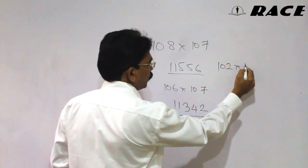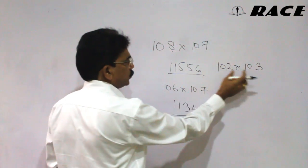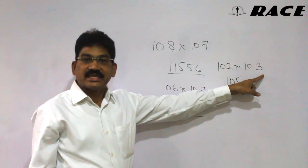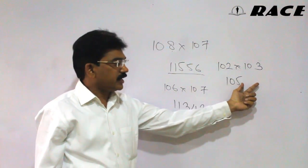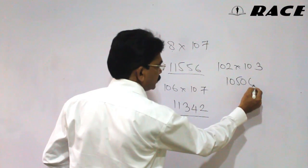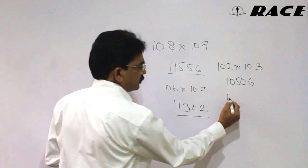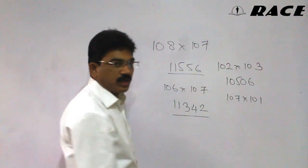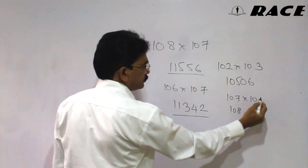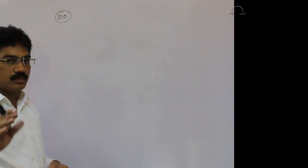Now take 102 into 103. Here 102 plus 3 is 105, and 2 into 3 is 6. We always have to write two digits in the second part, so since 6 is a single digit, we write it as 06. So the answer is 10506. For 107 into 101: 107 plus 1 is 108, and 7 into 1 is 07. So the answer is 10807.